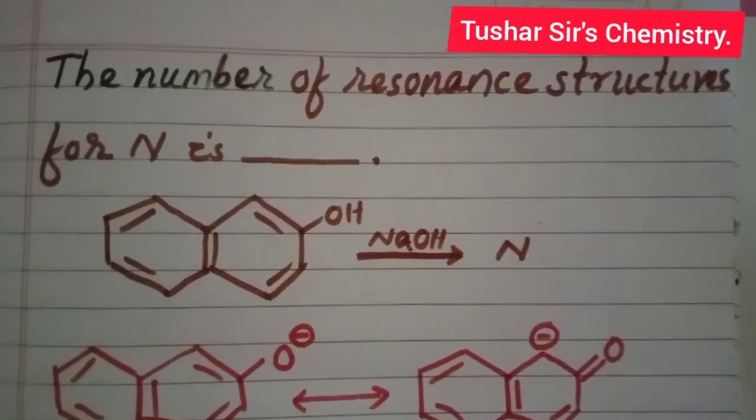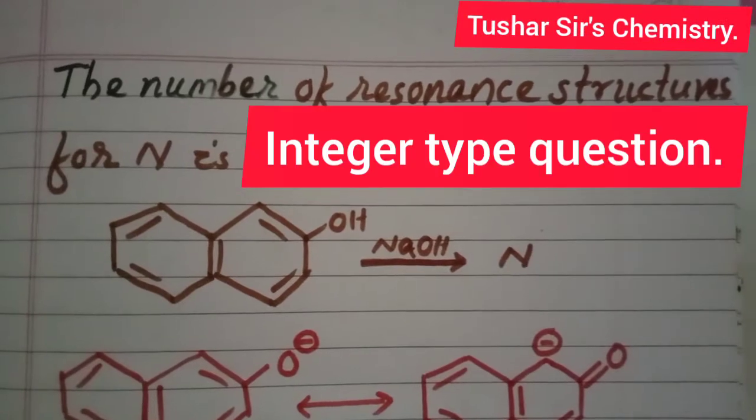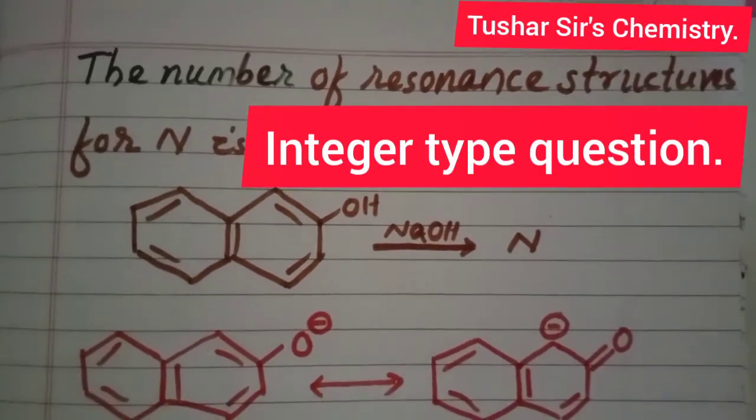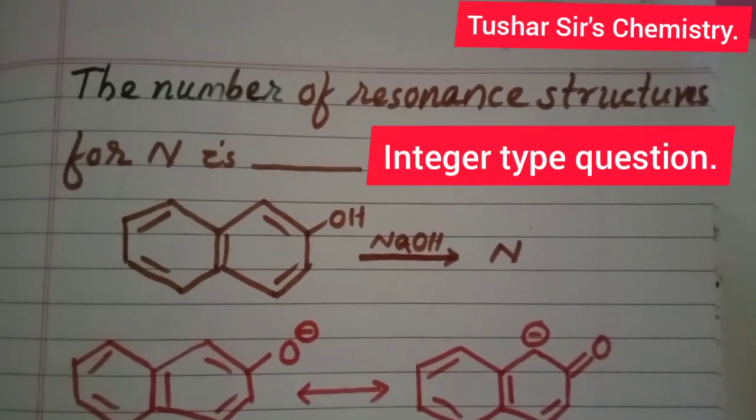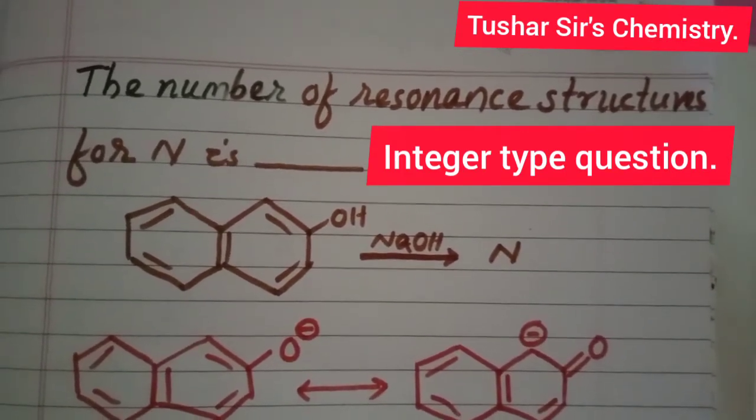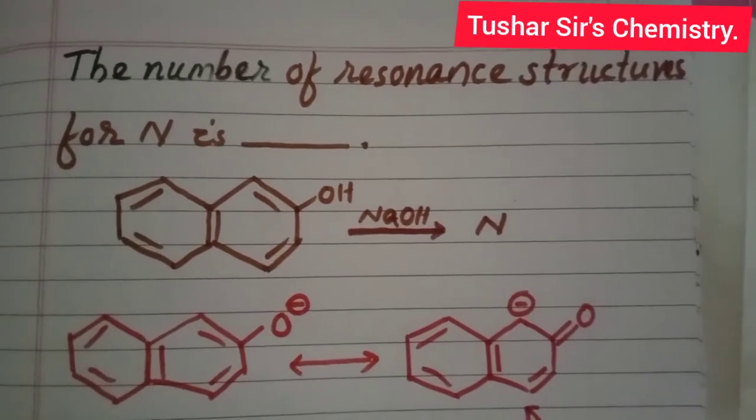Hello, welcome back to my channel. In this video, we'll solve one integer type question. The question is: the number of resonant structures for N is? This is beta-naphthol; on treatment with sodium hydroxide, it gives N.